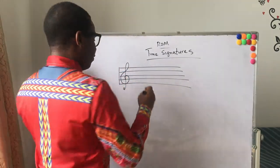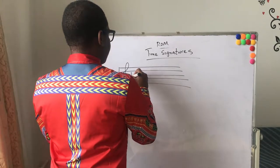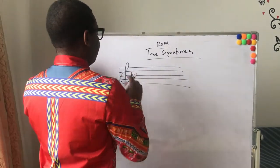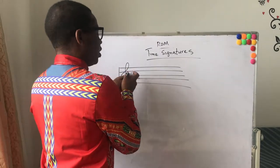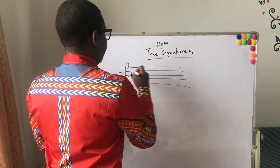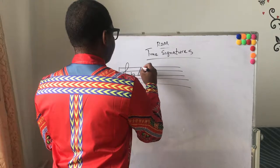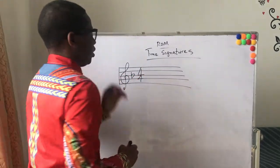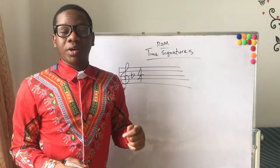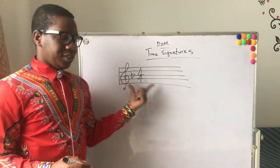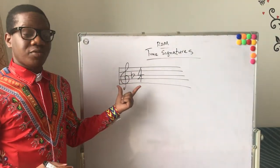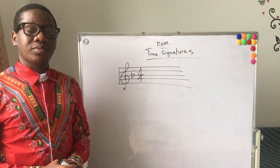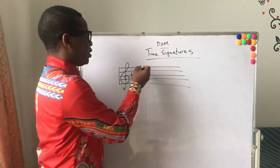This is the clef, and then the key signature — for example, one flat which is F major, and one flat is written on B — and then the time signature. I'm sure you're familiar with things like this: the stave, the treble clef, the key signature, and the time signature.